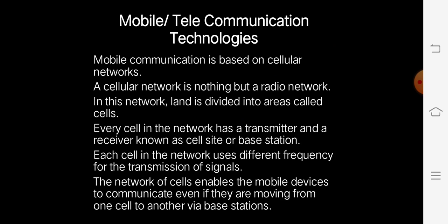Mobile communication technologies are based on cellular networks or mobile networks. A cellular network is a radio network which divides land into areas called cells. Every cell has a transmitter and receiver, also known as a cell site or base station. Each cell uses a different frequency for signal transmission, enabling mobile devices to communicate even while moving from one cell to another via base stations.